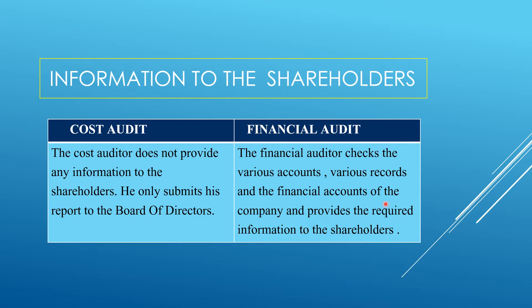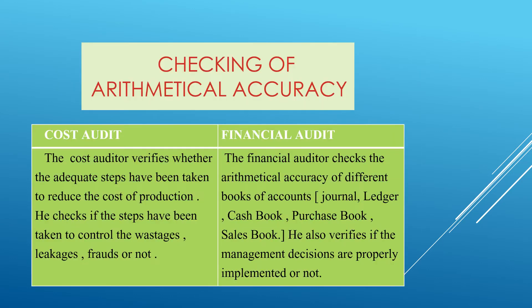The cost auditor does not provide any information to the shareholders — he only submits his report to the board of directors. But the financial auditor checks the various financial accounts and records of the company and provides the required information to the shareholders as well. Regarding arithmetical accuracy, the cost auditor verifies whether adequate steps have been taken to reduce the cost of production, checking at every stage to control wastage, leakage, and fraud.